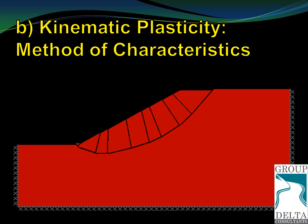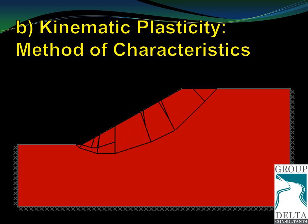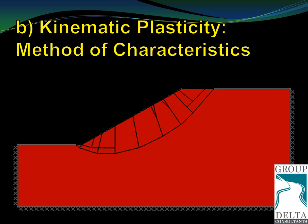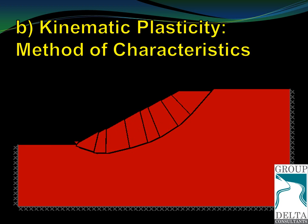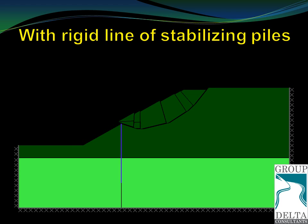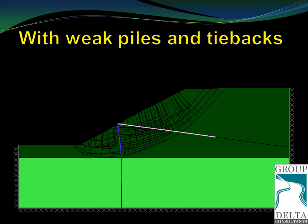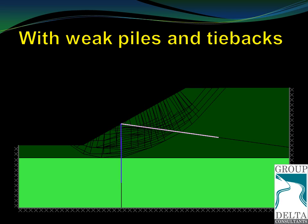Another popular technique for numerically analyzing slope stability involves kinematic plasticity and the method of characteristics. Here you see the critical mode of failure of a slope modeled by this method. You can include piles — if the piles are weak, you will predict a plastic hinge and the failure will involve the pile. You can also include tiebacks in combination with drill shafts. In this particular case, we have a relatively weak drill shaft and a relatively weak tieback; the drill shaft develops a plastic hinge and the tieback is yielding or being pulled.